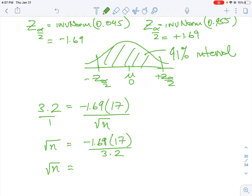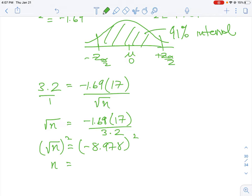We have 1.69 times 17 divided by 3.2, which gives us 8.978. In order to solve for n, we square both terms, so the square gets rid of the square root, and n equals that answer squared, which is roughly 80.61.